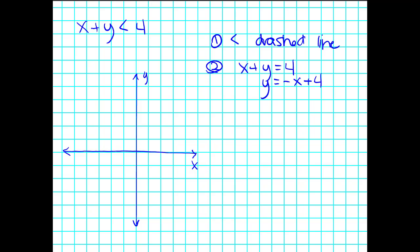That's a line with a Y-intercept of 4, and then it goes over 1, down 1, over 1, down 1. From there, we can connect the dots and get our boundary line. That should be dashed.